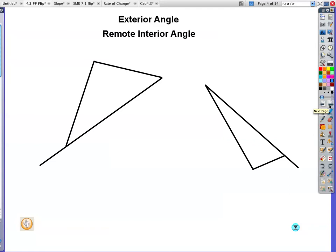New vocabulary here. An exterior angle and a remote interior angle. This, located right here, is my exterior angle. Exterior, kind of made like on the outside, the exterior of your house, that's the outside. So the exterior angle is right here, then over here.